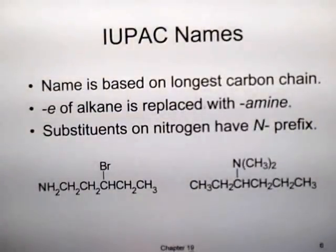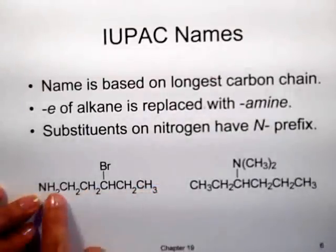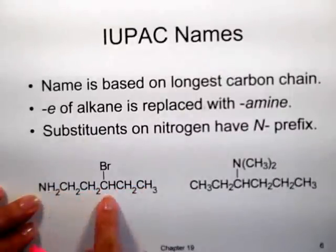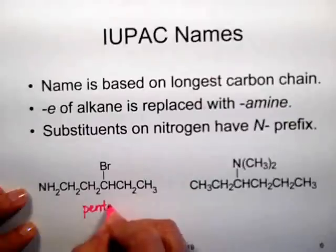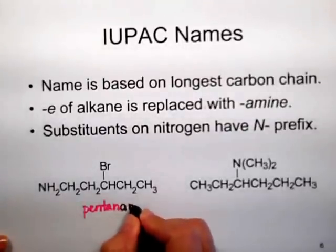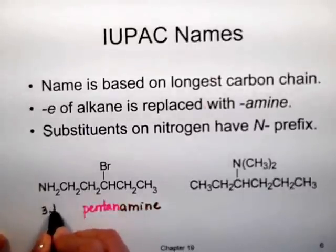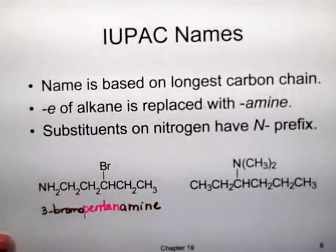For IUPAC names, you again find the longest possible chain, drop the final E of the alkane name, and replace it with 'amine.' For example, the longest chain here is 5 carbons, so it's a pentane — dropping the E and adding amine gives pentanamine. This compound also happens to have a bromide on carbon number 3, so this is 3-bromopentanamine. The IUPAC system does not use spaces in the name.